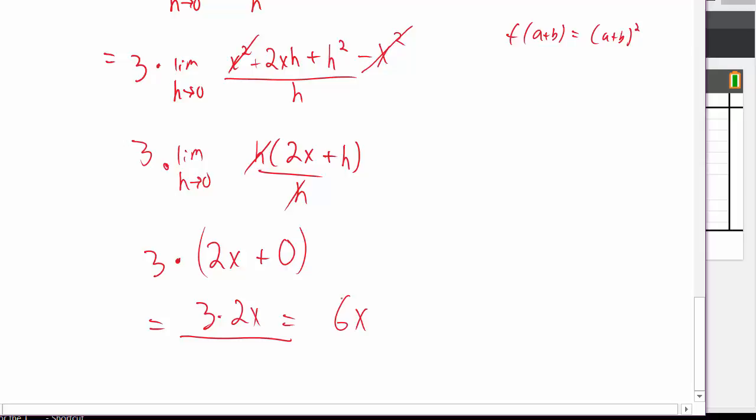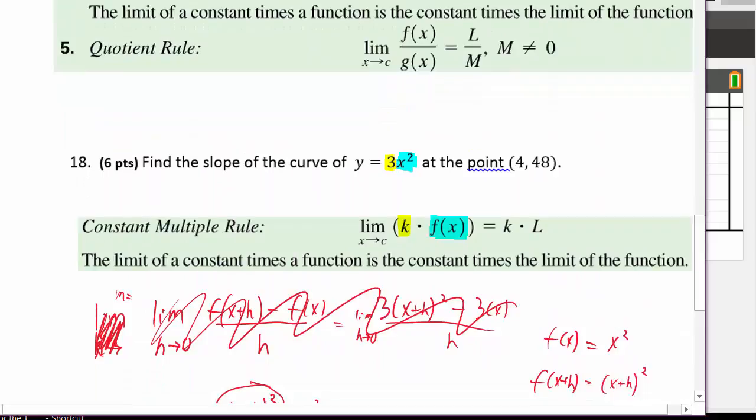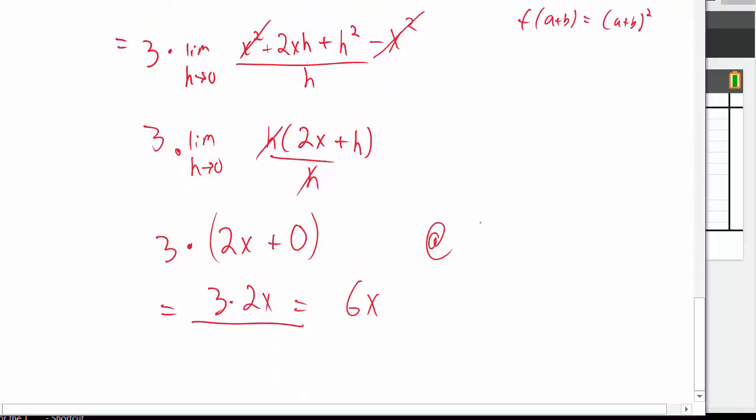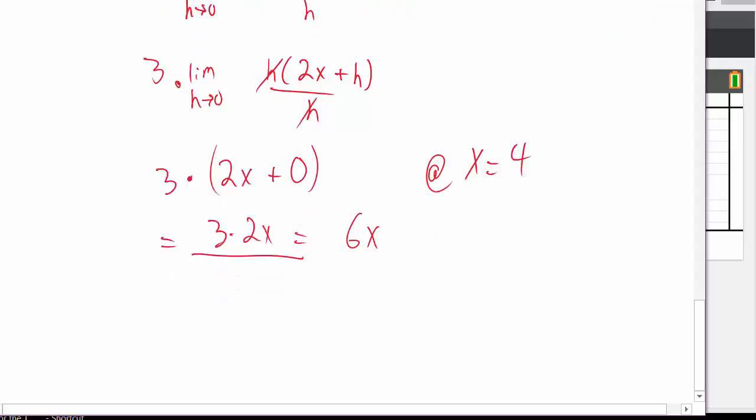But how do we find a slope? The slope is 6x. Well, that's the general slope at any point x. How do I figure out what the slope is at? Remember what my point was? My point was at the point 4 comma 48. Well, the idea is you want to find it at an x value of 4. Your slope depends on what x value you're in. Well, guess what? You do 6 times 4, which gives you 24. And that's how you find the slope of a curve.